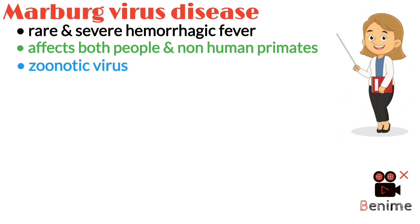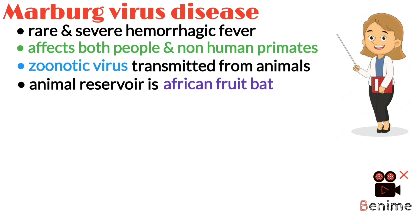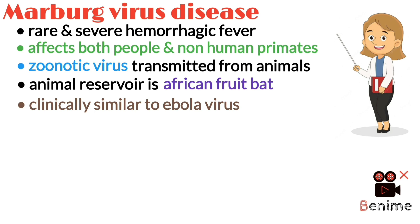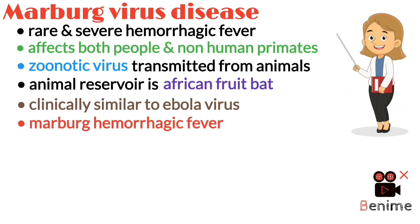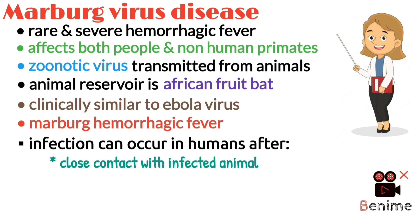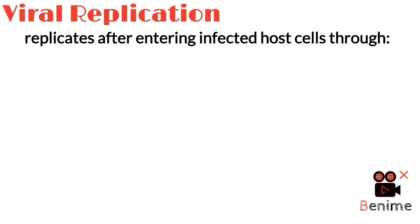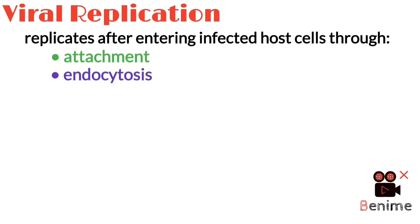Marburg virus is a zoonotic virus that is initially transmitted from animals to humans. The animal reservoir in nature for the Marburg virus is the African fruit bats. Marburg virus is clinically similar to the Ebola virus and can lead to Marburg virus disease, formerly known as Marburg hemorrhagic fever. Infection can occur in humans after close contact with an infected animal or its body fluids and through contaminated food products. Marburg virus replicates after entering infected host cells through attachment, endocytosis, and fusion.